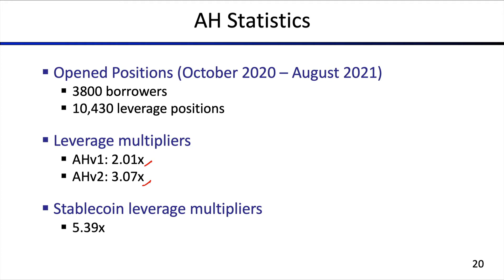We found that the average leverage multipliers are about 2.x and 3.x on the respective AlphaHomora versions — version 1 and version 2, where version 2 allows more assets beyond Ether to be used. We also find, rather intriguingly, that stablecoin leverage multipliers on average are quite higher — the average stablecoin multiplier is almost 5.4x, which makes sense because stablecoins are by nature less volatile, so the risk of liquidation is not that big.